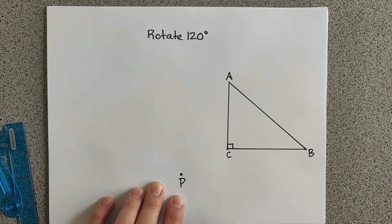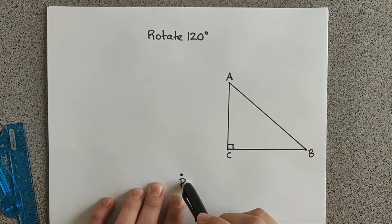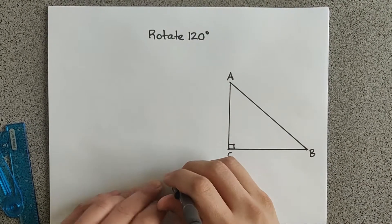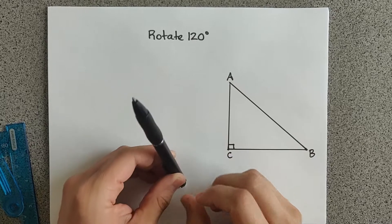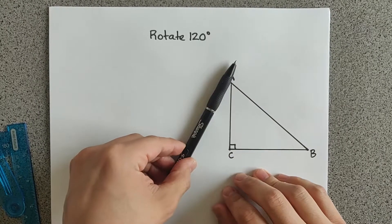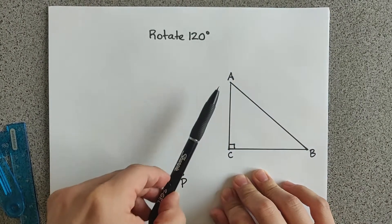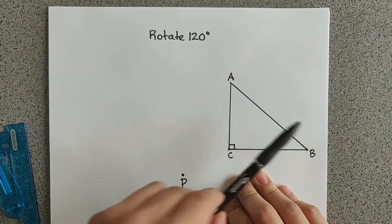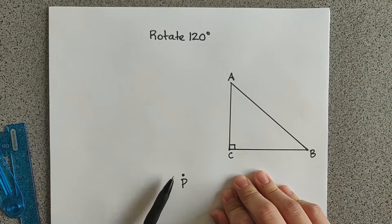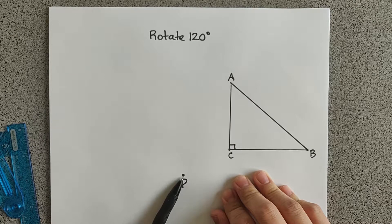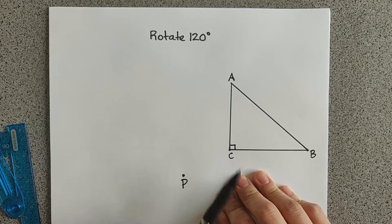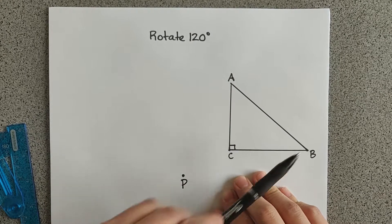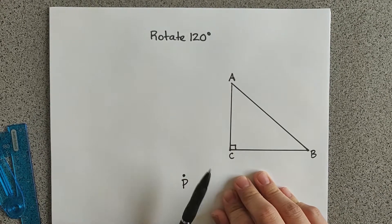The way you do that is you always start at your point, and then you just draw a straight line to each point on your shape. So from here we would draw a straight line from P to A, and then from P to C, and then from P to B.